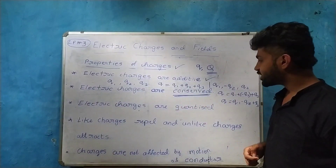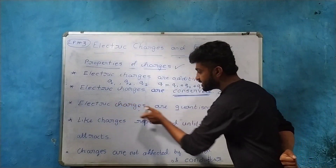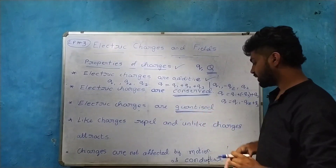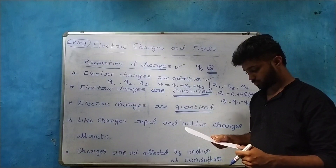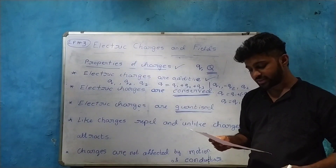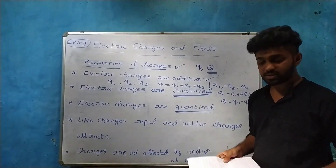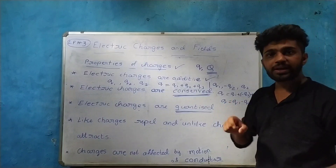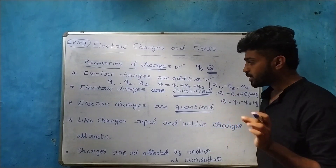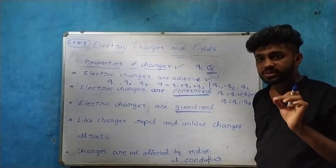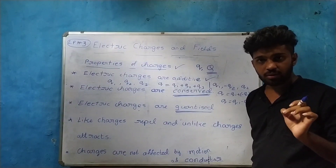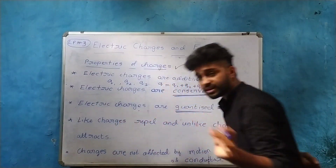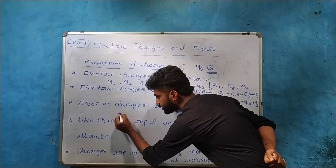The third property states that electric charges are quantized. The electric charge of any system is always an integral multiple of the least amount of charge. The least amount of charge is defined as the magnitude of charge on a proton or an electron.